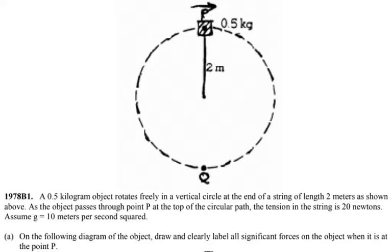As the object passes through point P at the top of the circular path, the tension in the string is 20 newtons. Assume g is 10 meters per second squared. On the following diagram of the object, draw and clearly label all significant forces on the object when it is at point P.